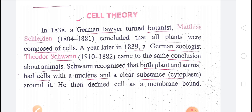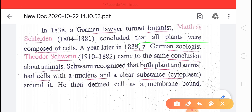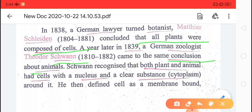Next is cell theory. Cell theory was given by a German botanist Schleiden and a German zoologist Schwann. First, Schleiden concluded that all plants were composed of cells. Later, Schwann concluded the same about animals. They said that both plants and animals are made up of cells and they have a nucleus within the cell.